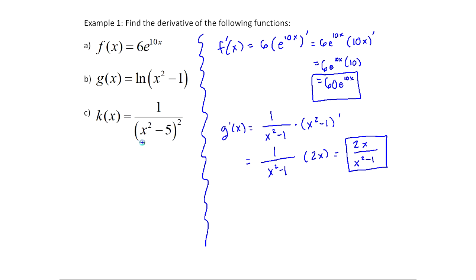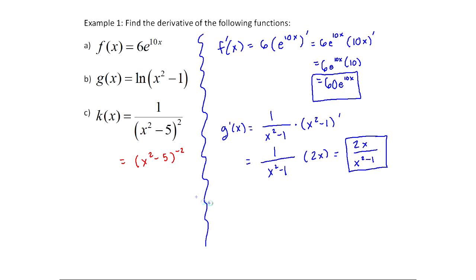Example k(x) is not an obvious chain rule problem. You might notice it's a quotient and use the quotient rule, but I'd say that's overkill. Without doing any calculus, I can rewrite using the rule that 1/x^n = x^(-n): k(x) = (x²-5)^(-2) since it's in the bottom of a fraction with 1 on top. Why is that useful? If this were x^(-2), that'd be a simple power rule. So it's not x^(-2), but I can treat it that way with the chain rule.